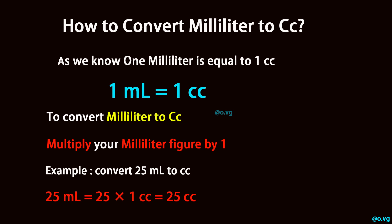To convert milliliter to CC, multiply your milliliter figure by 1. For example, convert 25 milliliters to CC: 25 milliliters equals 25 times 1 cubic centimeter, which equals 25 cubic centimeters.